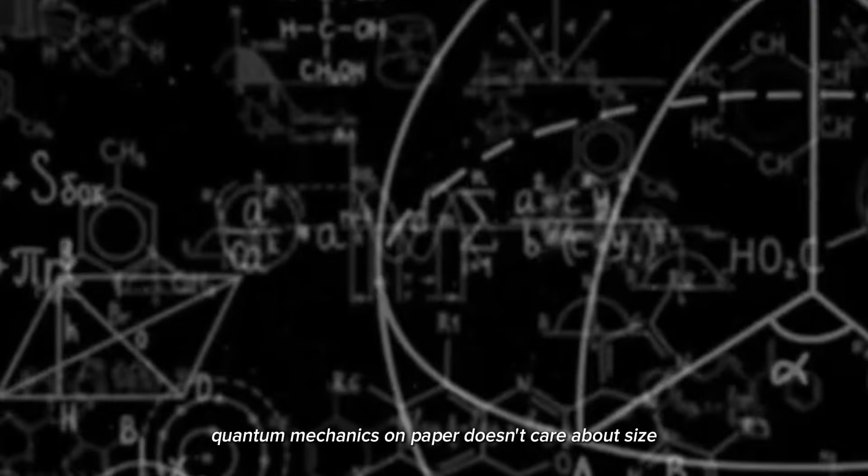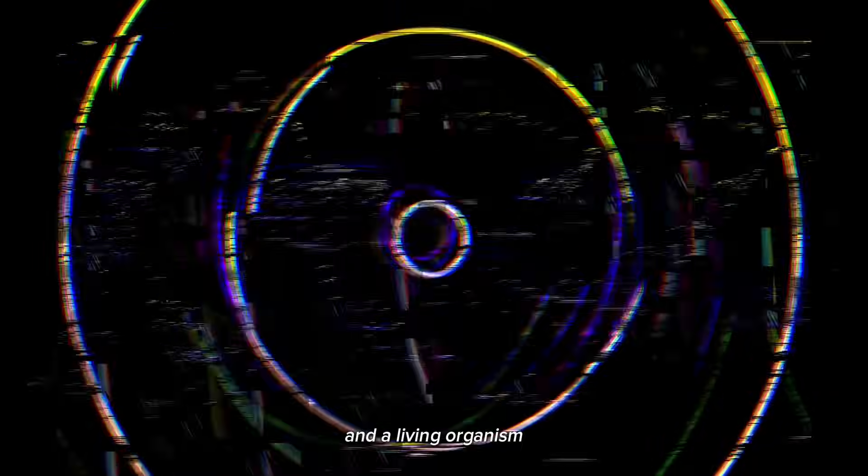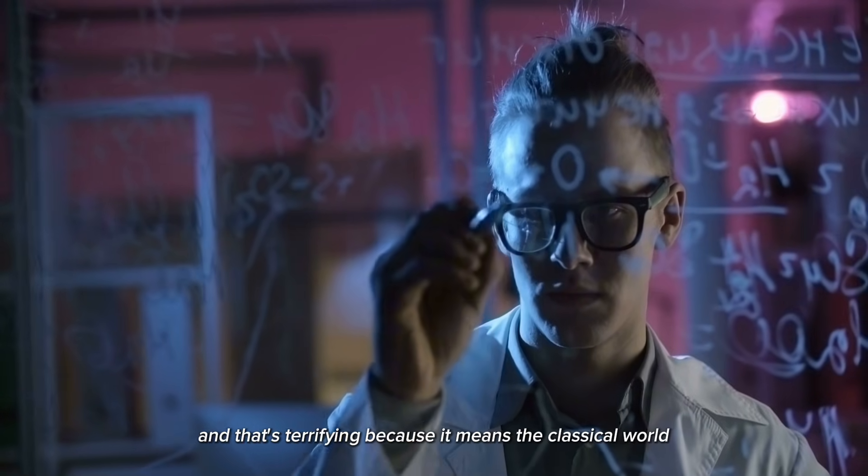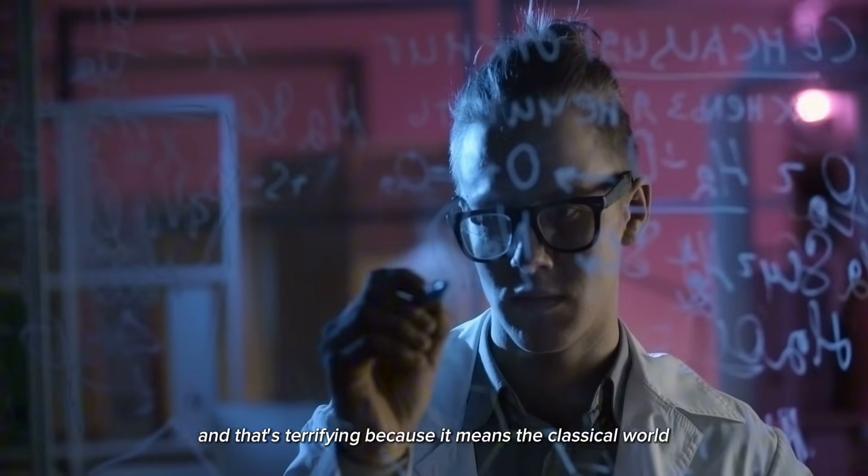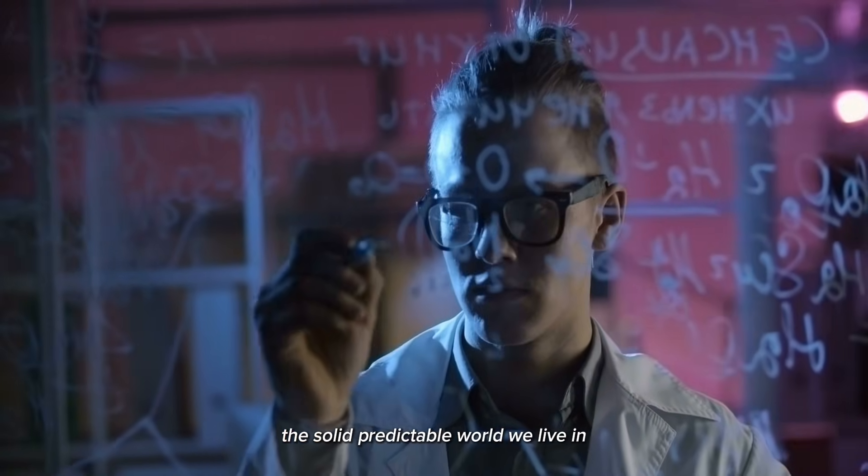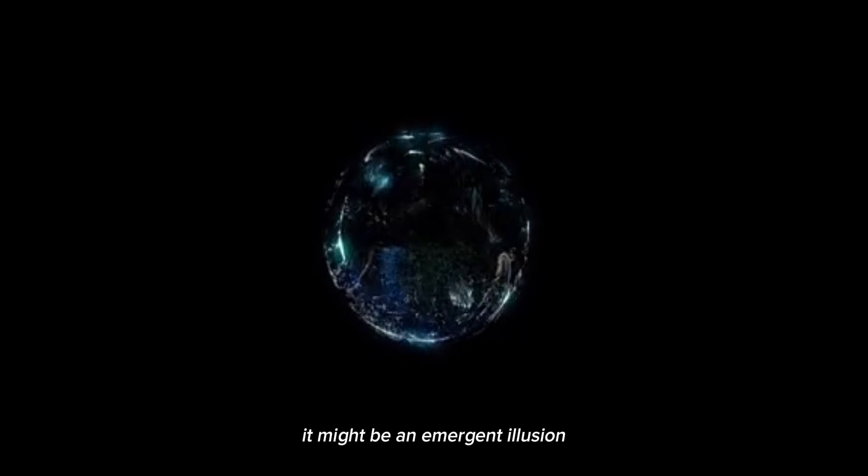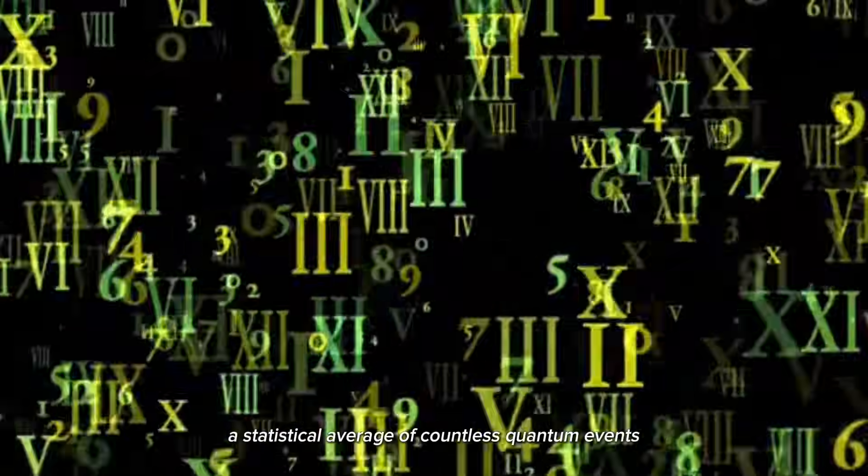Quantum mechanics, on paper, doesn't care about size. The equations make no distinction between an electron and a living organism. If the math is taken seriously, everything should obey quantum rules. And that's terrifying. Because it means the classical world, the solid, predictable world we live in, might not be fundamental at all. It might be an emergent illusion. A statistical average of countless quantum events.